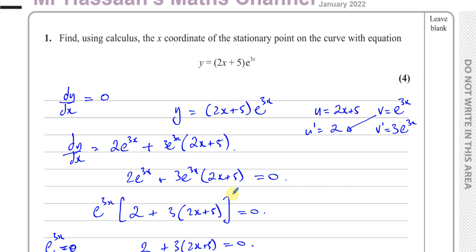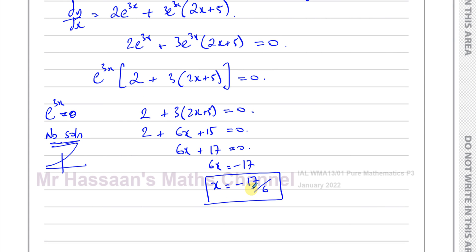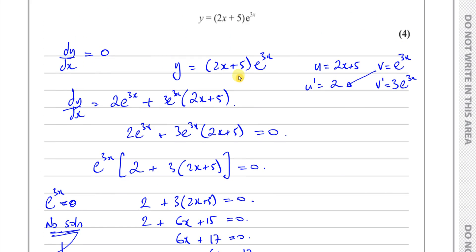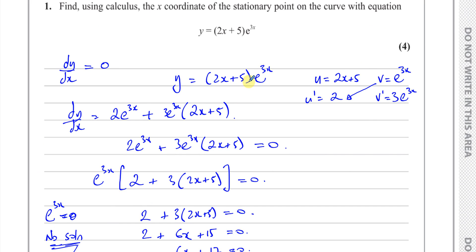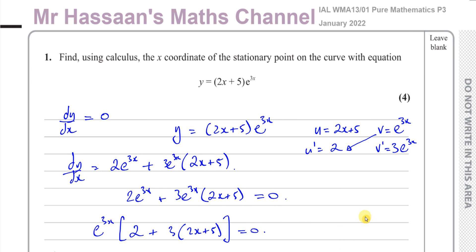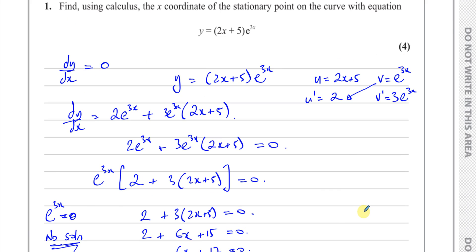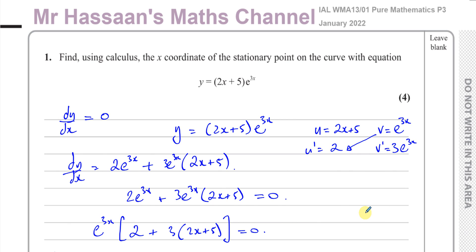We don't have to do anything else with it. We don't have to find the y-coordinate. If we did, we'd just simply replace the x in this equation with negative 17 over 6. But here, that's the answer to the question. x equals negative 17 over 6. And that's question number 1. Pretty simple. Product rule is done. So other questions from this particular paper you'll find in the playlist that should appear in this region here, this area here. Other questions from differentiation from P3 can be found in this playlist over here. And you can subscribe to my channel by clicking on this link. Thank you for watching, and see you soon.